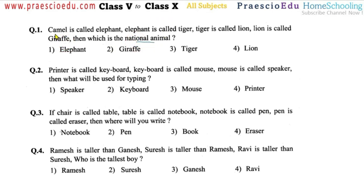The calling name is interchanged but the animal is the same. Camel is not called camel now — for a moment we are calling it elephant. That animal elephant is now called tiger. Tiger is called lion, lion is called giraffe. The national animal is tiger, and the tiger animal is being called lion. So lion, given in option number four, is the correct answer.